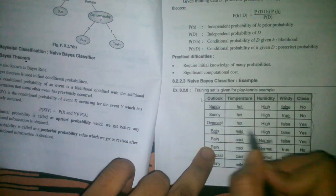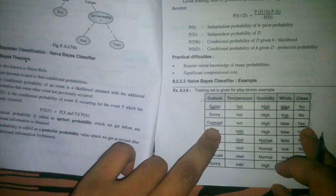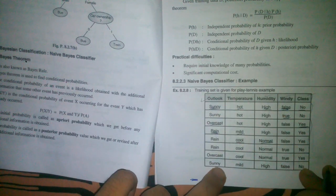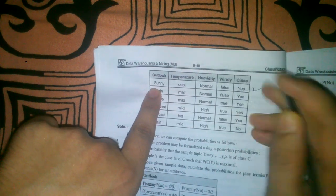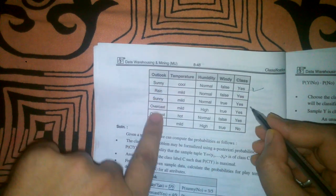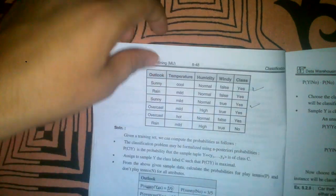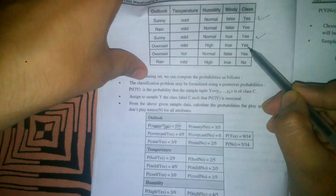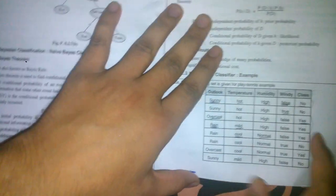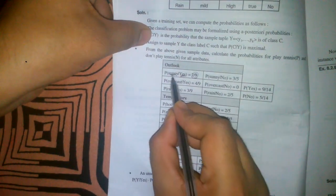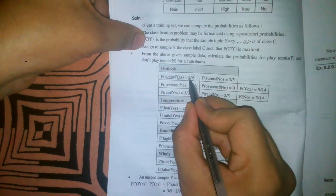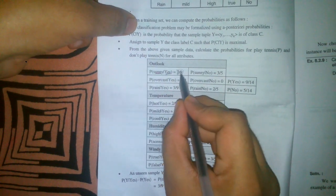To calculate P(sunny | yes), we look through the data and find rows where the outlook is sunny and the class is yes. We find two such rows. We also count the total number of yes values in the class column, which is nine. So P(sunny | yes) = 2/9.